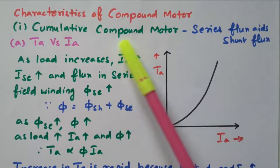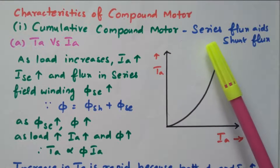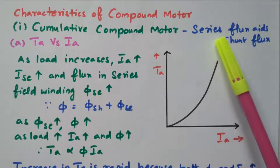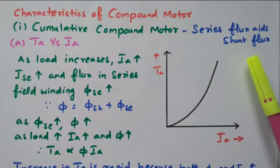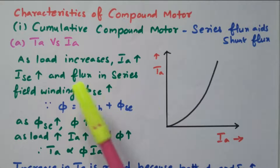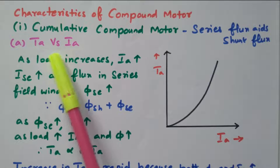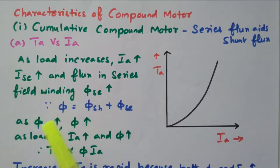First, we will see the cumulative compound. Cumulative compound means the series field is added with the shunt field — both are added together. The series field flux is added with the shunt field flux. In that, first we will see the armature torque versus armature current, Ta versus Ia.